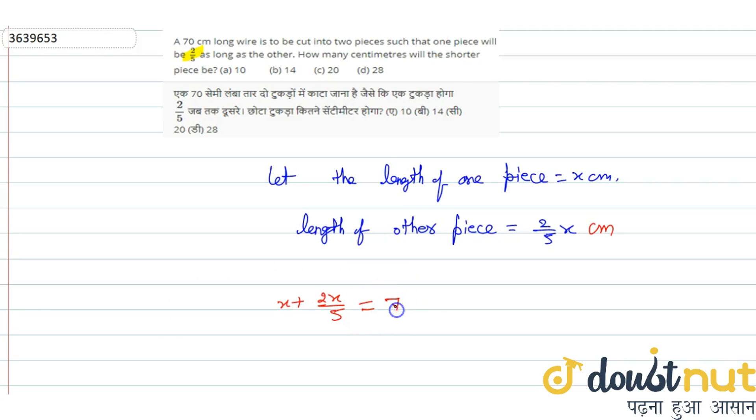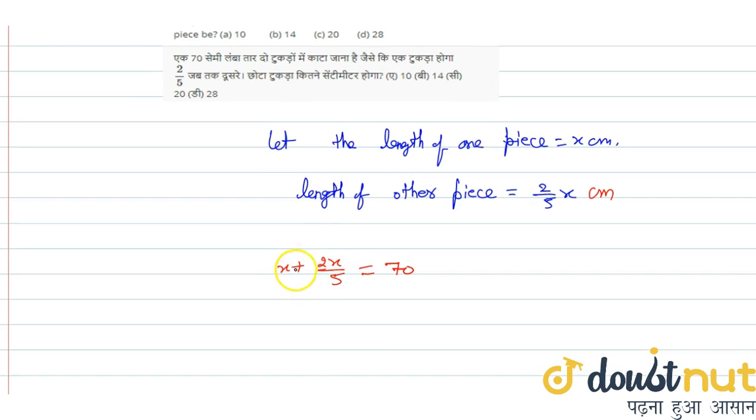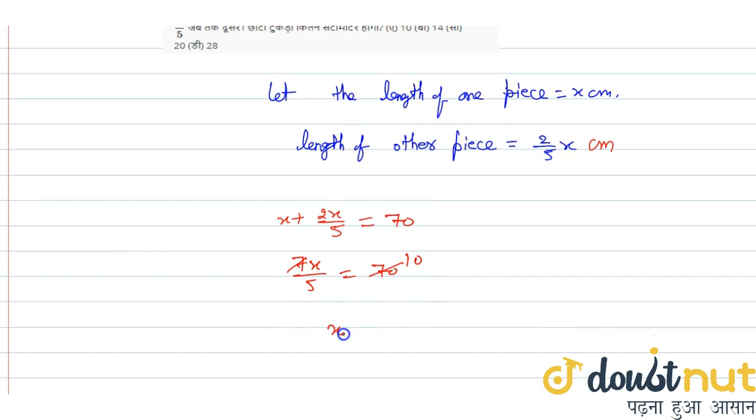So, x plus 2x/5 equals 70. This is 7x/5 equals 70. So, 7x equals 350. Therefore, x equals 50 cm.